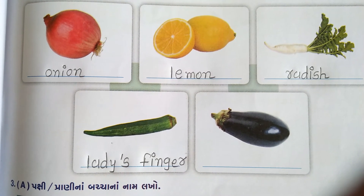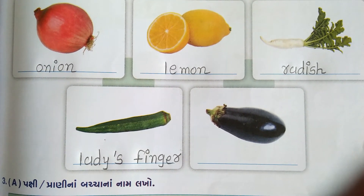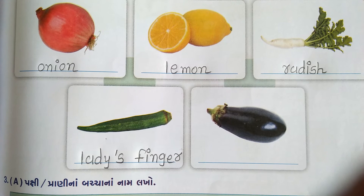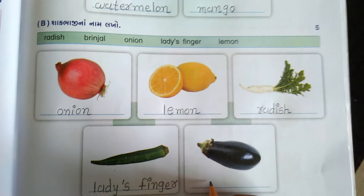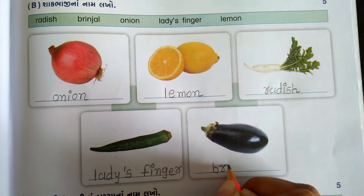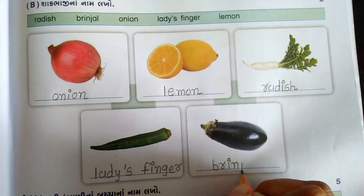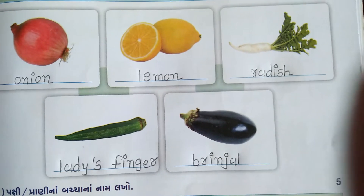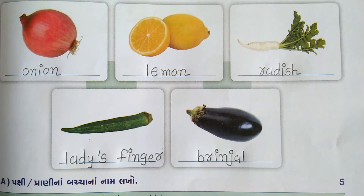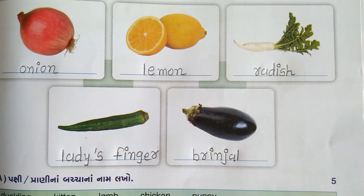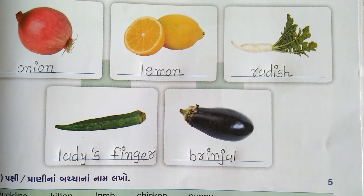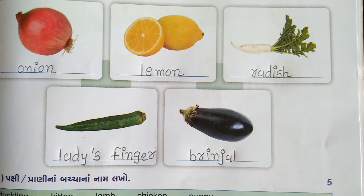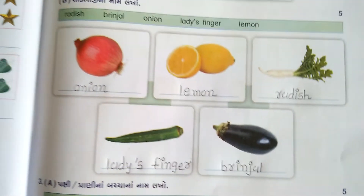Write the spelling without mistakes. After that there is a picture of rīṅgaṇ (eggplant/brinjal) - what is it called? BRINJAL. Write it: B-R-I-N-J-A-L. BRINJAL means rīṅgaṇ. OK, written. Now let's see Question 3.